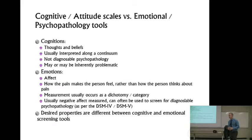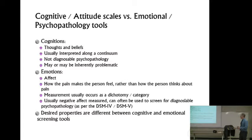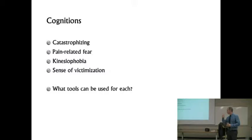When talking about emotions or affect — how pain makes the person feel rather than how they think about it — measurement is more of a dichotomy, especially if used as a screening tool: a pathology is either present or absent. They either reach the threshold for something like major depressive disorder or they don't. Usually we're measuring negative affect, and many tools can screen for diagnosable psychopathology as per the DSM-5.